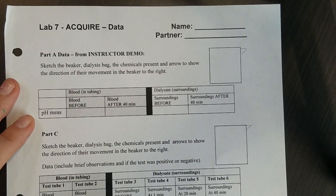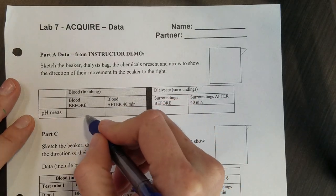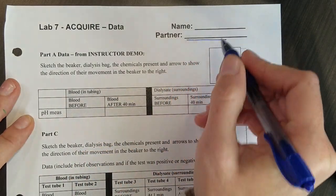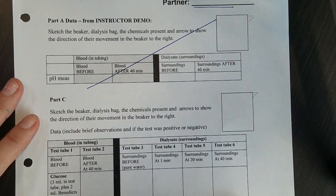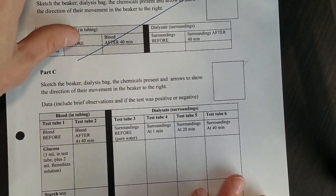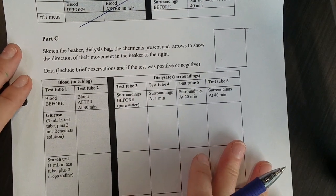Here's your data sheet. This is what you're going to turn in. If you work with somebody please write your partner's name but also write your name. We're not doing part A today but you will fill in observations for part C.